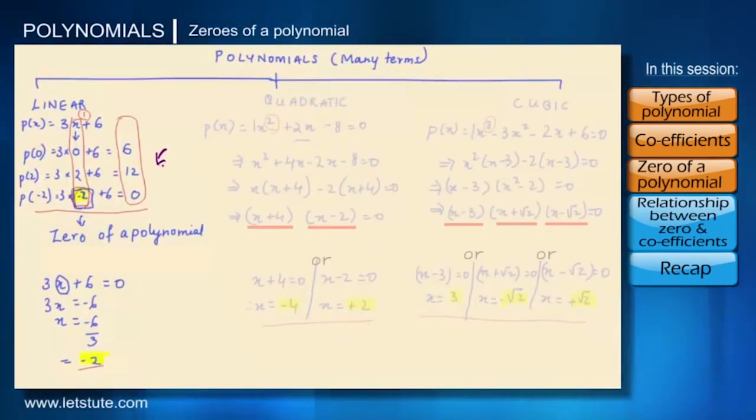Now let's look here. We saw that the value of the polynomial depends on its variable. So in the same way, it will also depend on the coefficients because the variables and the coefficients are multiplied.